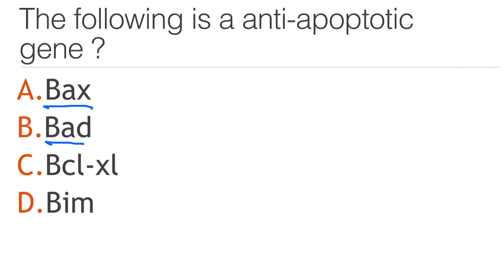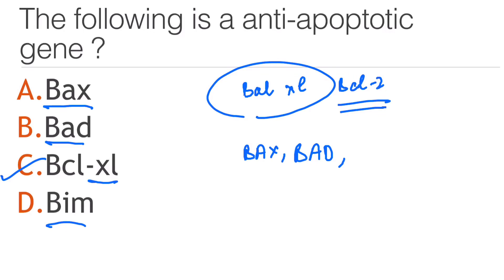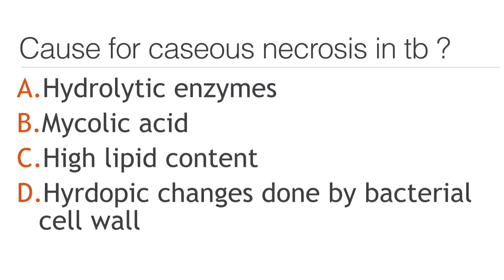Caspases 1 and 11 are involved in pyroptosis. The following is an anti-apoptotic gene: BAX, BAD, BCL-XL, or BIM? The answer is BCL-XL. BCL-XL and BCL-2 are anti-apoptotic genes, whereas BAX, BAD, and BIM are pro-apoptotic genes.